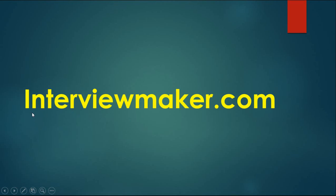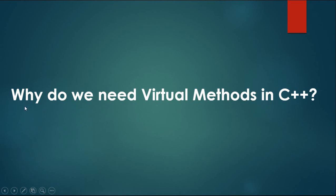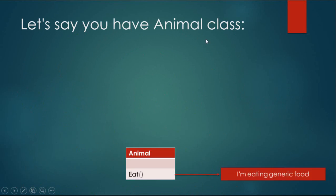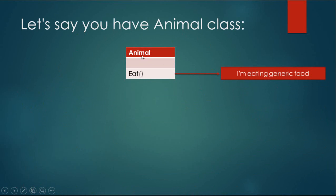Why do we need virtual methods in C++? Let's say you have an animal class, code for class animal.